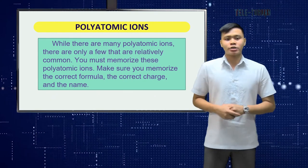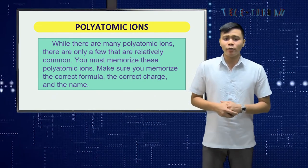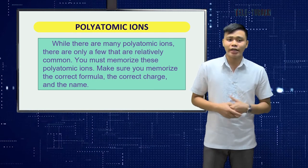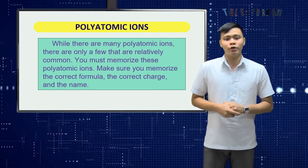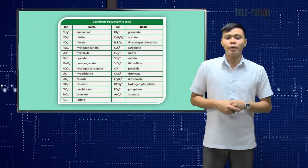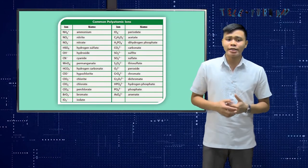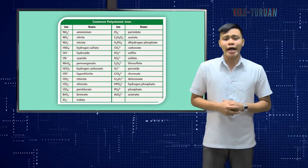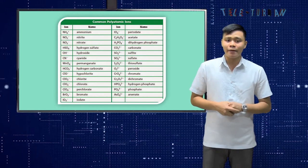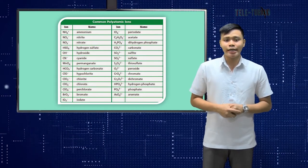Polyatomic ions: there are many polyatomic ions, but only a few that are relatively common. This table gives you the most common polyatomic ions. You must memorize these polyatomic ions — make sure you memorize the correct formula, the correct charge, and the name.